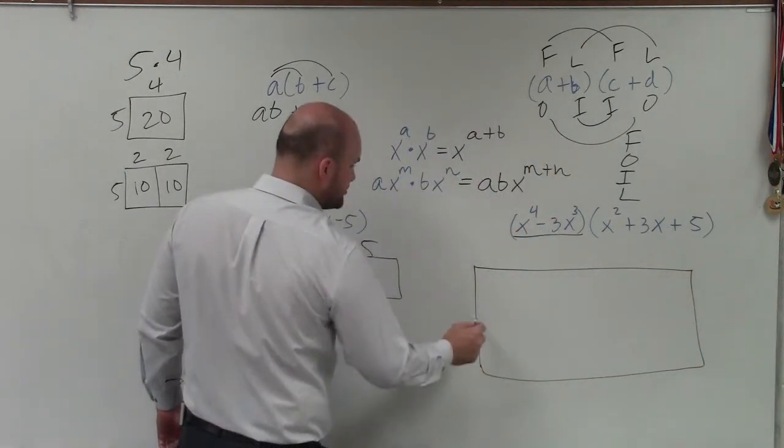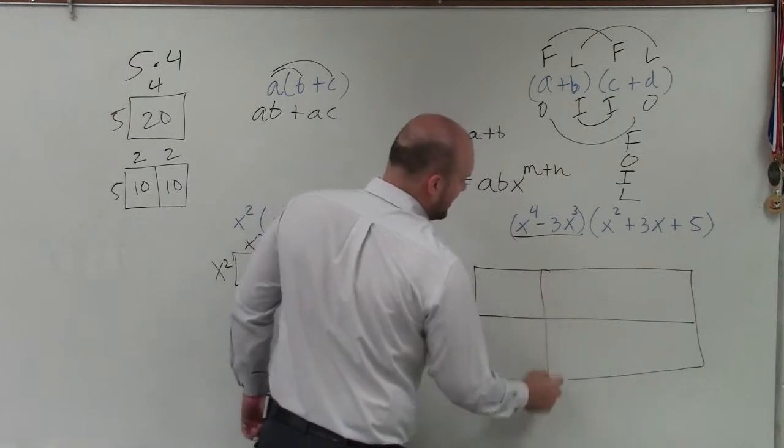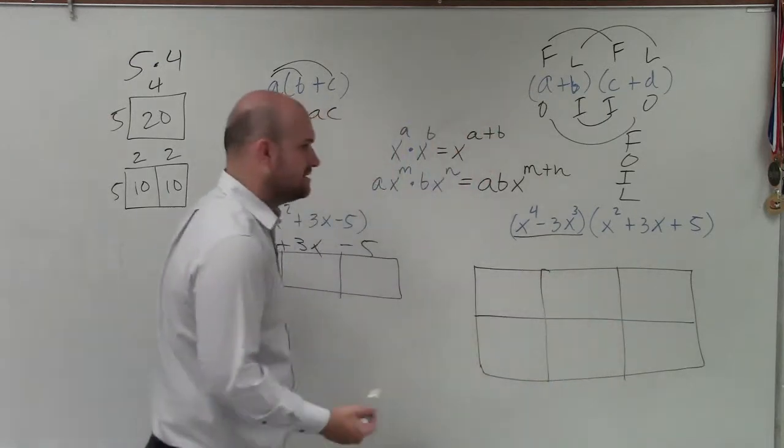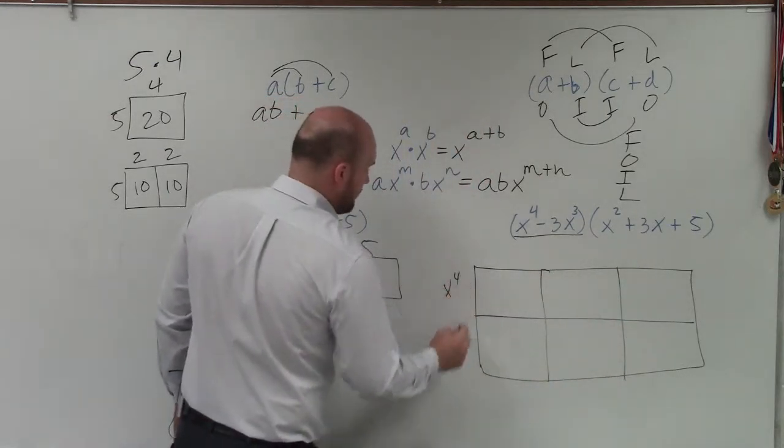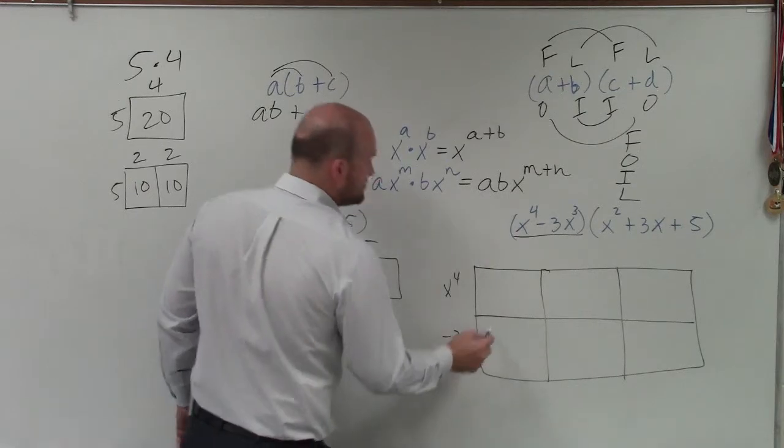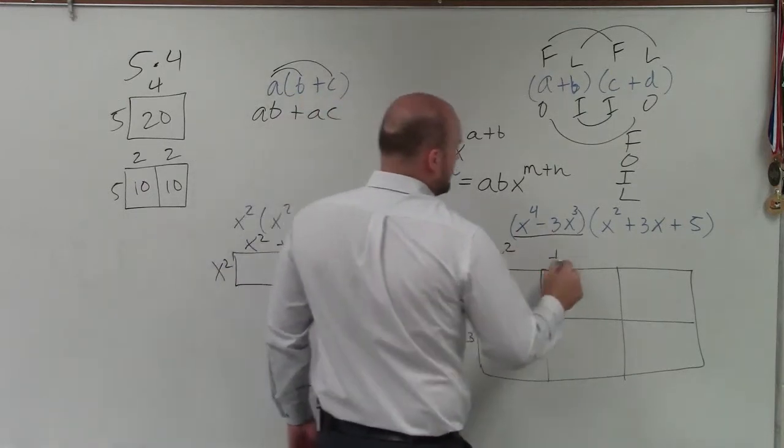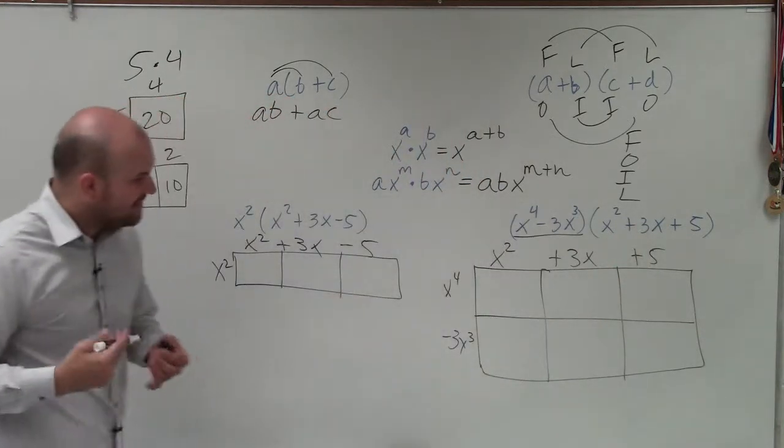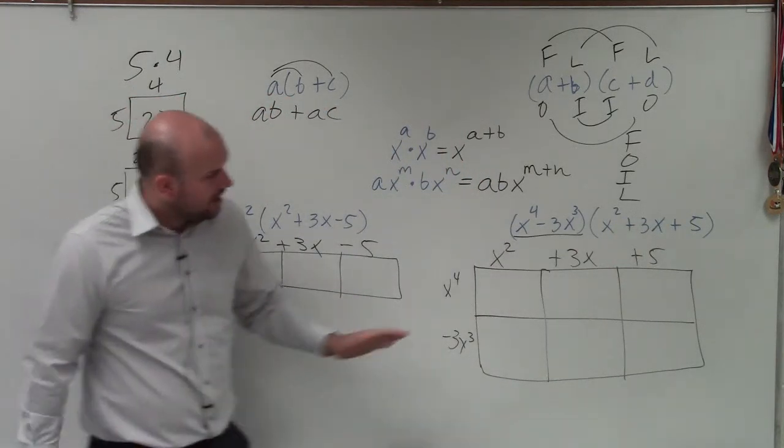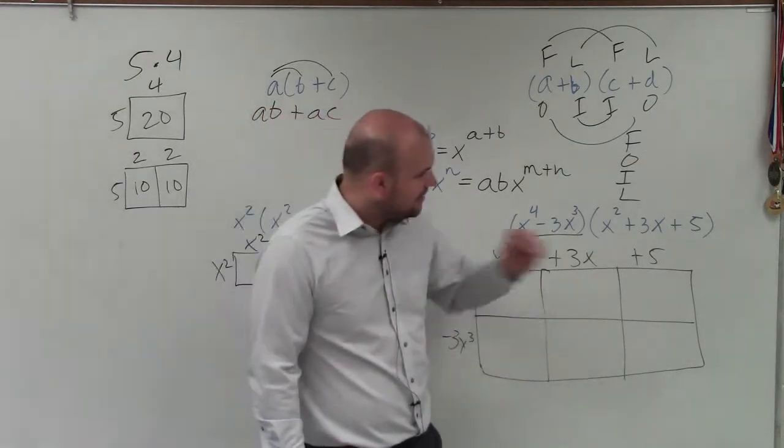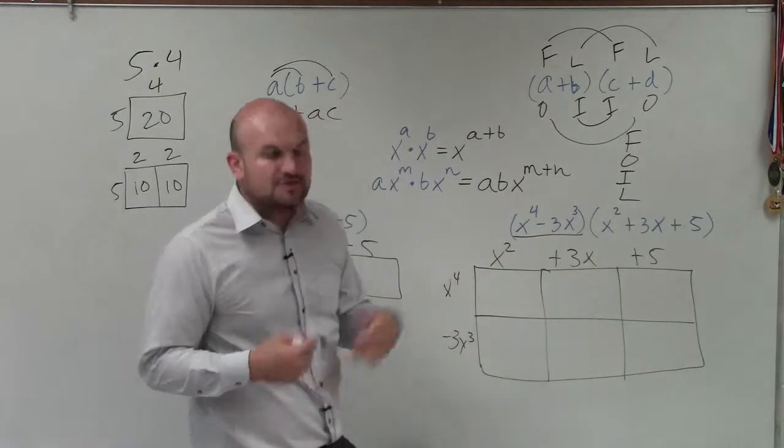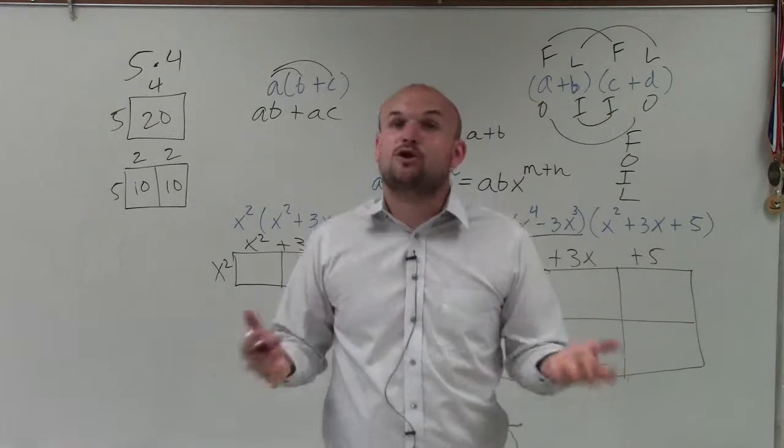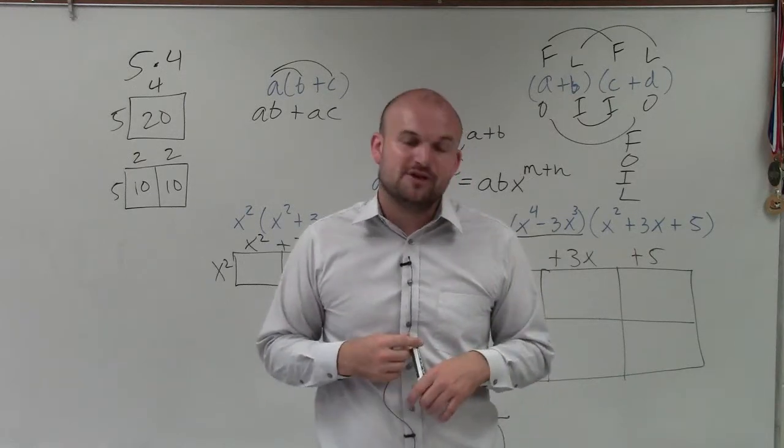And I'm not actually going to do the problem, but I just want you to see how I break it up. And so now I just write x to the fourth minus 3x cubed, and then I have x squared plus 3x plus 5. And there you go, ladies and gentlemen. That's all basically we need to go ahead and do to determine each one of those. So there you go, ladies and gentlemen. That is just a basic overview of how to multiply your polynomials. Thanks.